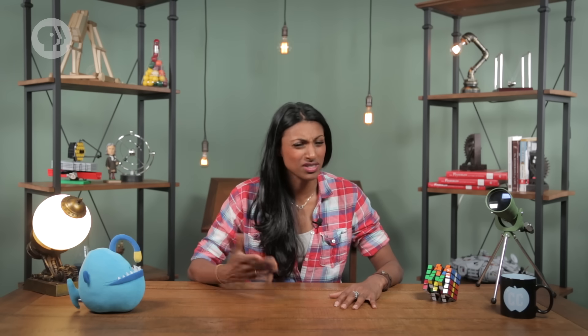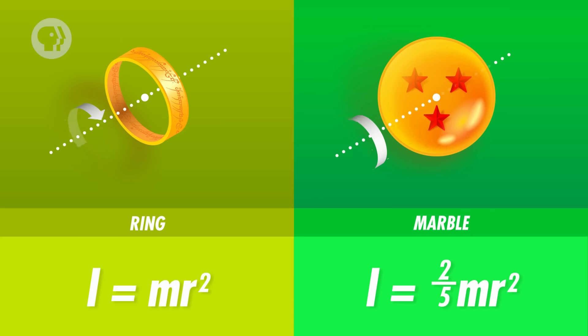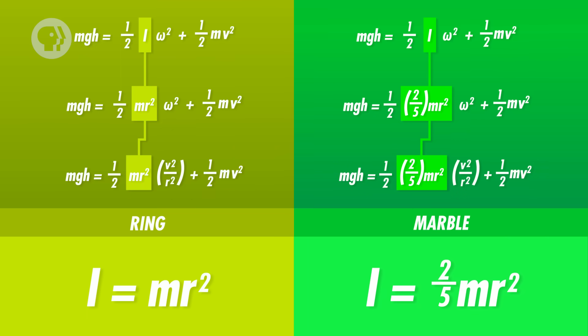So the box wins! But what's the runner-up — does the ring reach the bottom next, or does the marble? It turns out that the marble reaches the bottom before the ring, because it has a lower moment of inertia. The marble is a solid sphere, so its mass is distributed closer to its center. But the ring's mass is distributed far from its center — giving it a higher moment of inertia. Since the marble has a smaller moment of inertia, its velocity can take up a larger portion of its kinetic energy, which means it moves faster down the ramp.